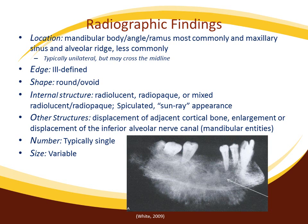Regarding radiographic findings, osteosarcoma is most commonly found in the mandible, especially in the body, symphysis, and mandibular angle. Less commonly, it may present in the maxilla, with typical sites including the alveolar ridge and maxillary sinus. In either jaw, the lesion may be seen crossing the midline; while it is typically unilateral, this is not always the case.